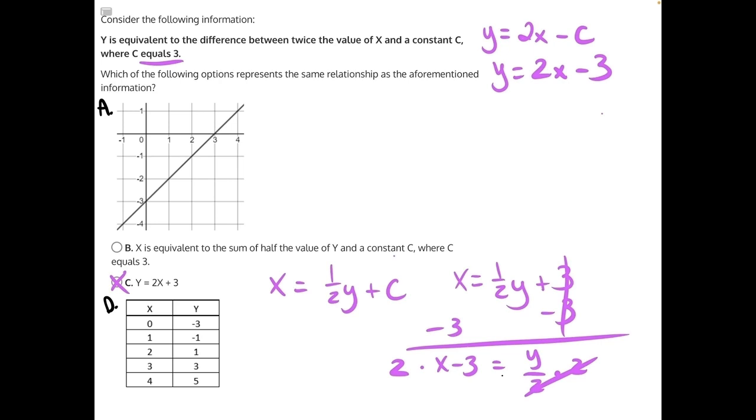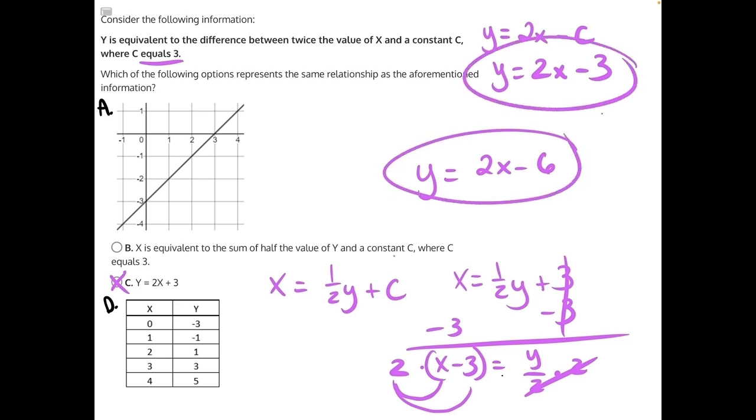This answer choice is counting on you to only multiply the first two numbers on the side of the equation, 2 times x, and then leave your negative 3 alone, because then it would match our original equation. However, to balance the equation, we have to multiply this 2 to everything. So we do 2 times x, and 2 times negative 3, which would give us y is equal to 2x minus 6. And that does not match our original answer, making b incorrect.